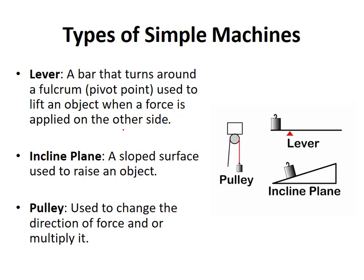The three types of simple machines we're going to focus on: A lever is a bar that turns around a pivot point, also called a fulcrum, that can be used to lift an object. A pulley is a rope or strand around a circular object that allows the rope to rotate. An inclined plane is a sloped surface where you can push an object up, with the end result being that you're lifting the object off the ground.